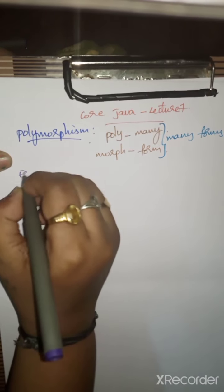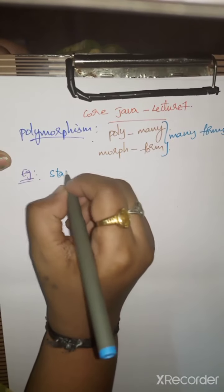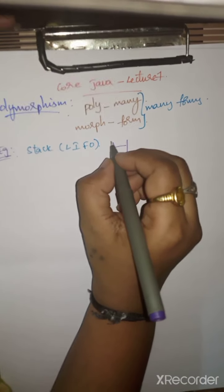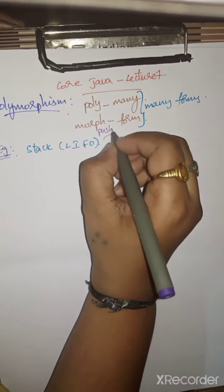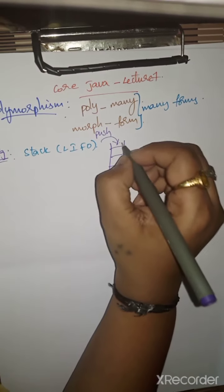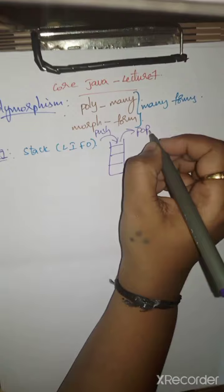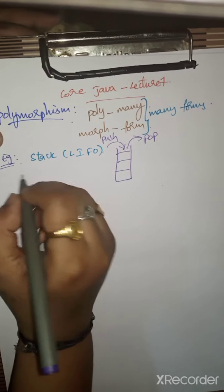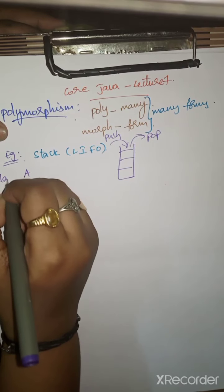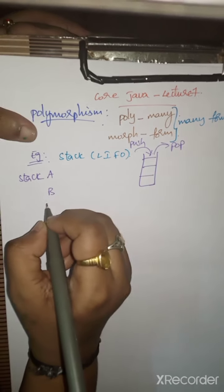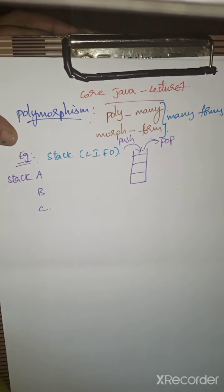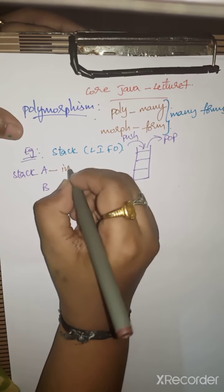Let me explain with an example. You know the concept of stack from C and data structures - a data structure that stores data and works on the principle of push. It pushes values into the stack and then pops them up. Here I will consider three stacks: Stack A, B, and C. Stack A will hold integer values.